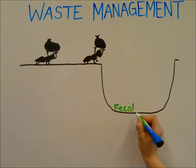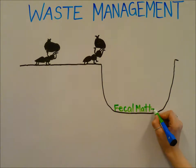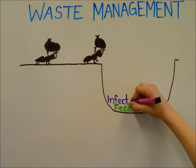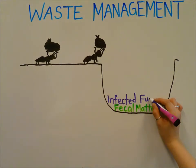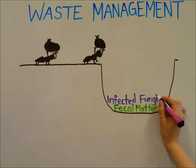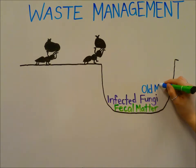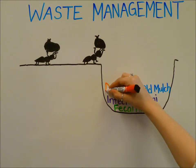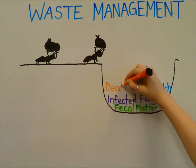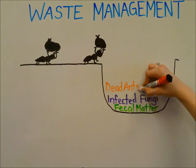Ants have designated waste rooms for unwanted materials, such as infected fungi, old mulch, and fecal matter. This is the same as most farms, which have waste piles for organic matter. Sometimes the ants and farmers leave it to decompose, and other times they shift it away from the farm.